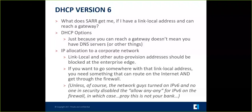If someone can reach your link local address from outside your security zone, every vulnerability on your computer is accessible and you're probably bypassing a firewall. So DHCP version 6 is a way to get a direct IP allocation on the corporate network so you're actually subject to the rules of various security requirements.